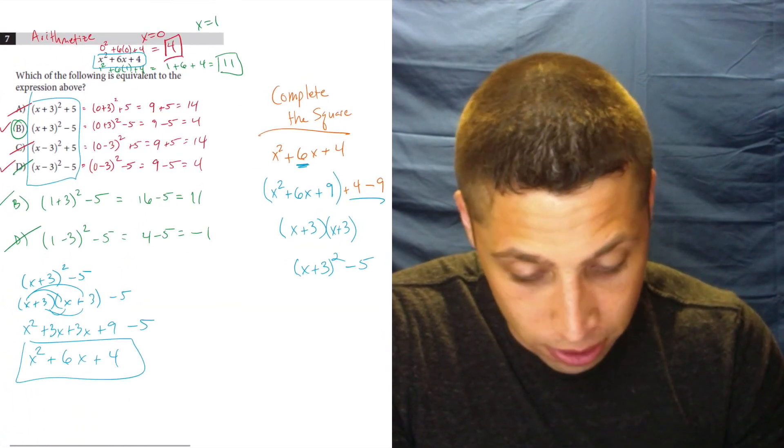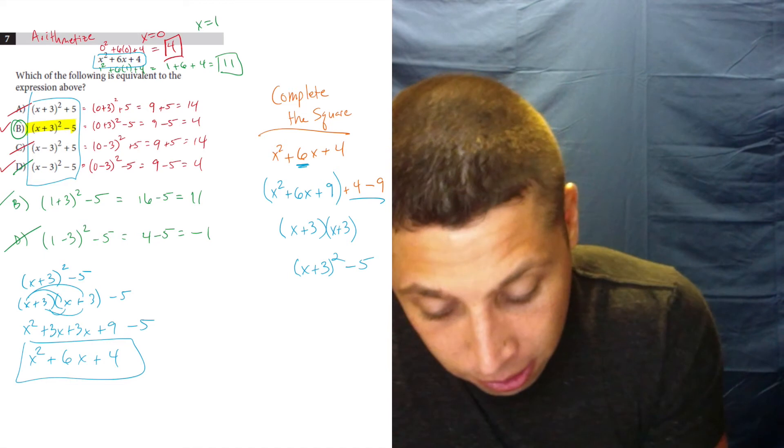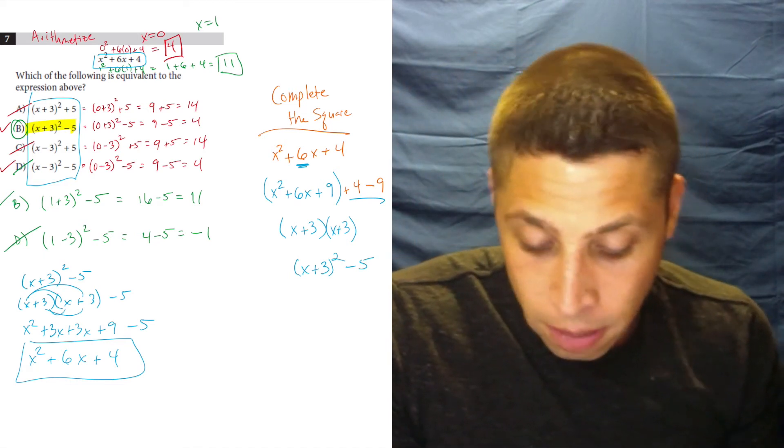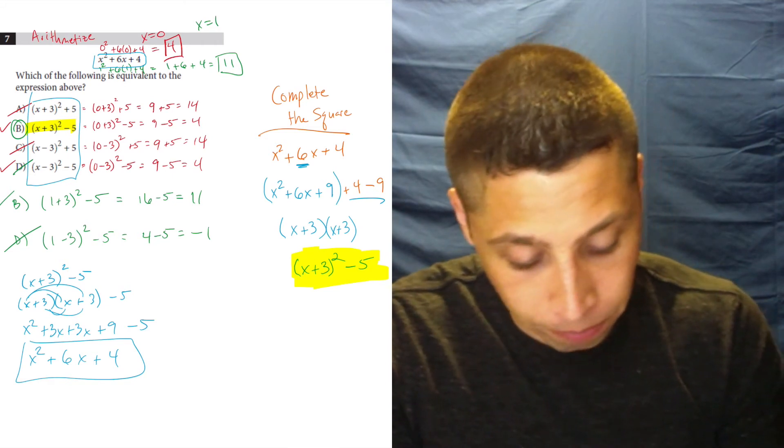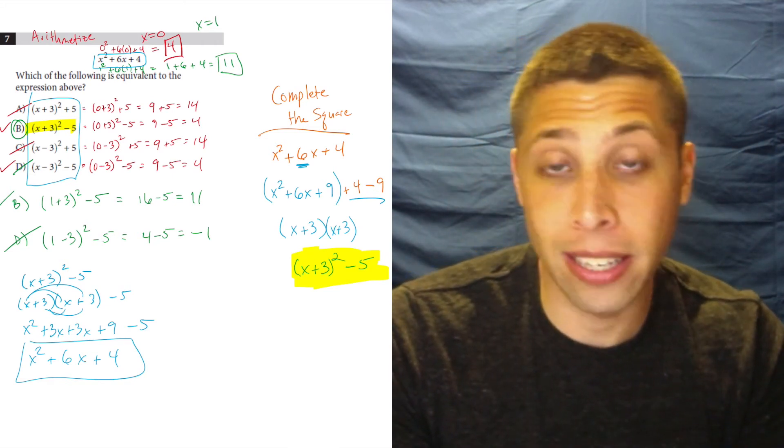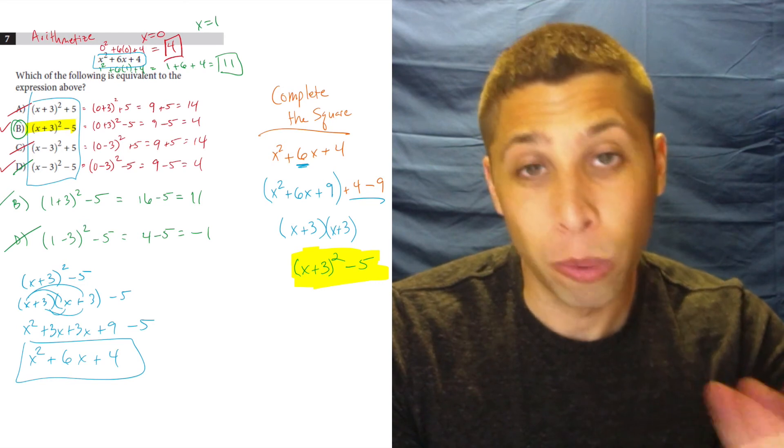And I'm kind of smushing everything here, but there it is. x plus 3 squared minus 5. x plus 3 squared minus 5. Same thing. And that's probably how the SAT book would tell you to do it.